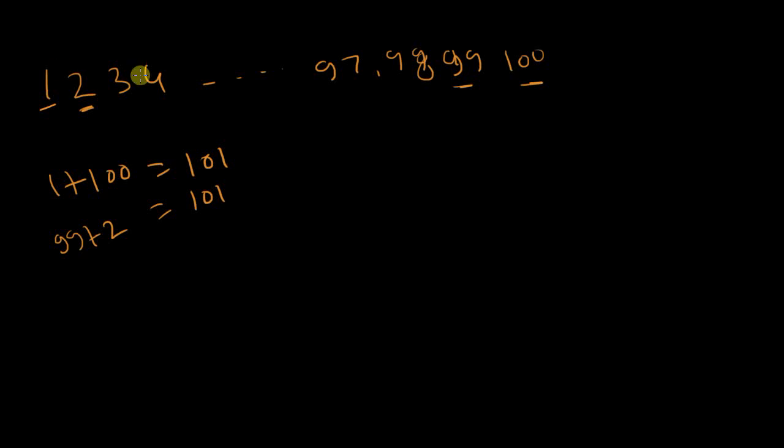He found a pattern: 3 plus 98 is again 101. So if we multiply 50 times 101, we can get 5050, because if we split 1 to 100 in two parts, you get 50 numbers on one side and 50 on the other: 1 to 50 and 51 to 100.